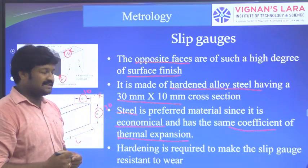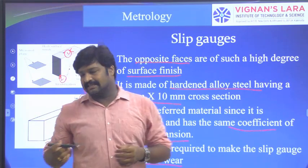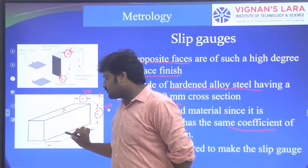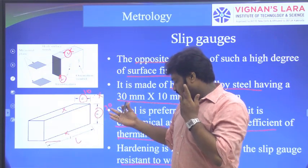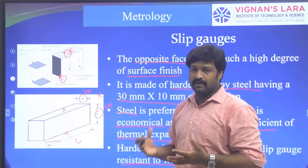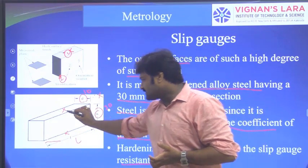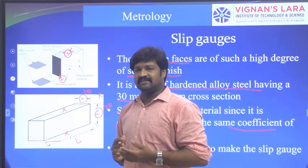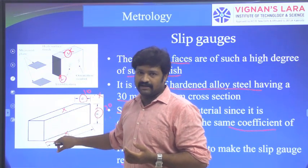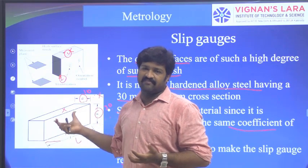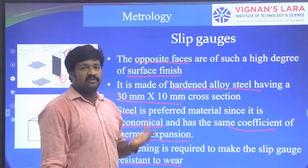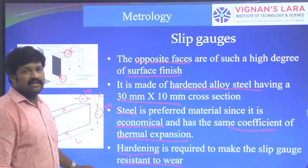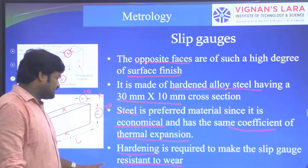Hardening is required to make the slip gauges resistant to wear. Since slip blocks are end standards, only the two opposite measuring faces are used for measurement. During the measuring process, these surfaces may be exposed to wear and tear. To improve the life of the component, we need high wear resistance. So a hardening process is performed to make the slip gauges resistant to wear and extend their service life.